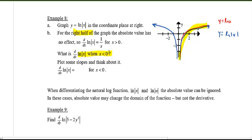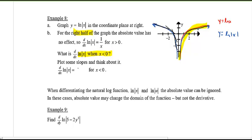On the left side, when x is less than zero, think about the slopes. If you plot the slopes along the left side of the graph, what you should see is that the derivative is still 1 over x. This means that when differentiating ln of the absolute value of x or ln of the absolute value of u, we can ignore the absolute value — the derivative is the same. The domain of the function may change, but the derivative does not.